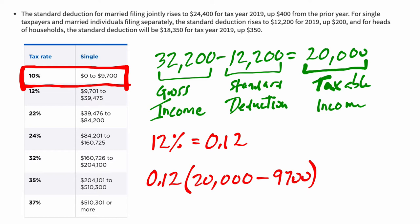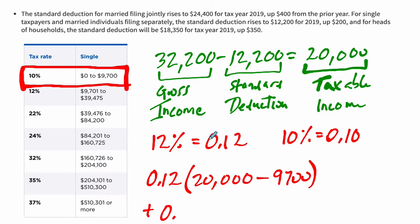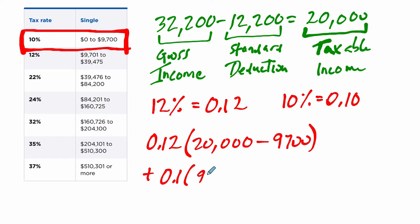There's still more money in our income that gets taxed — but at a lower rate. So we also add 10% — that's 0.1 — which applies to the remaining $9,700. We had $9,700 at the lower bracket plus the amount above $9,700 in the second part, and this gives us our total taxes. One useful check: all the numbers inside the parentheses should add up to your taxable income of $20,000. That will always be the case.